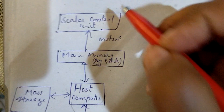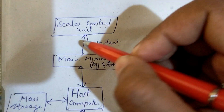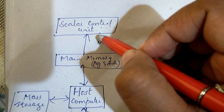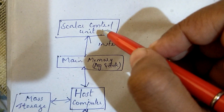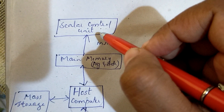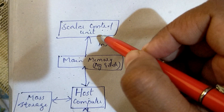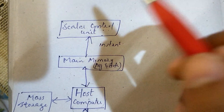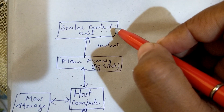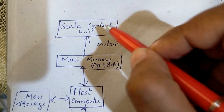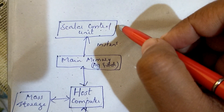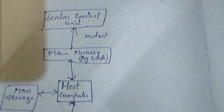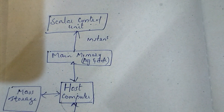Scalar operations are executed in Scalar Processors using Scalar Functional Pipelines. The instructions are in Scalar Operations, executed by Scalar Processors with the help of Scalar Functional Pipelines.